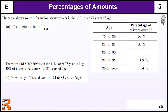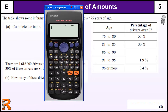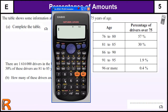Here we've got a question about percentages of amounts — it's a great GCSE level five national curriculum question. The first thing we've got to do is complete the table. If this is all the possible information about people over 75 years of age, then the percentages should add up to 100.